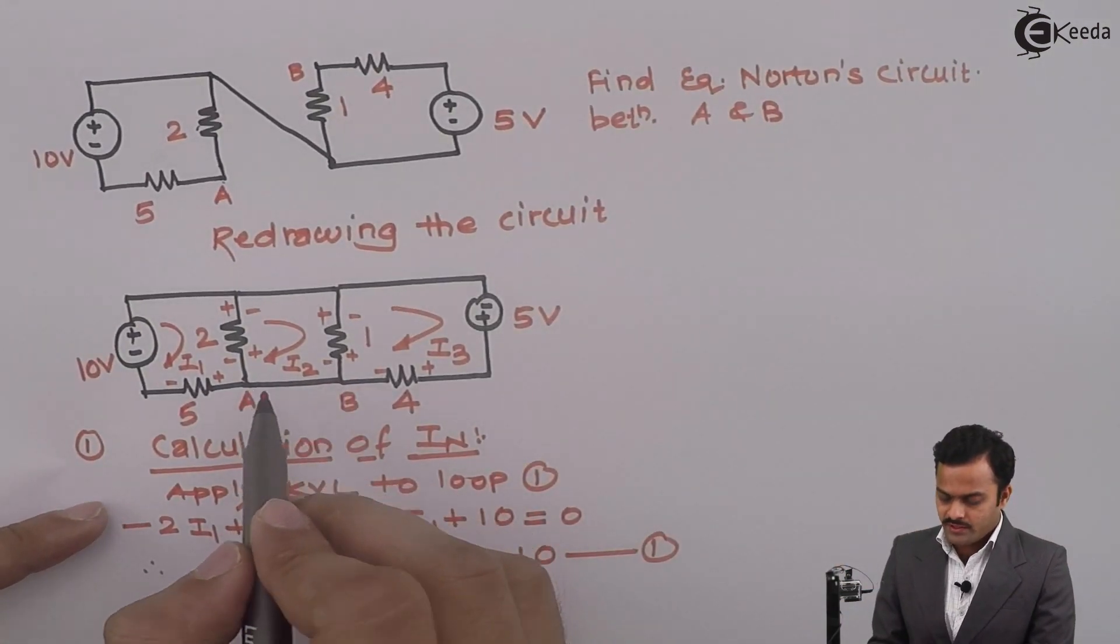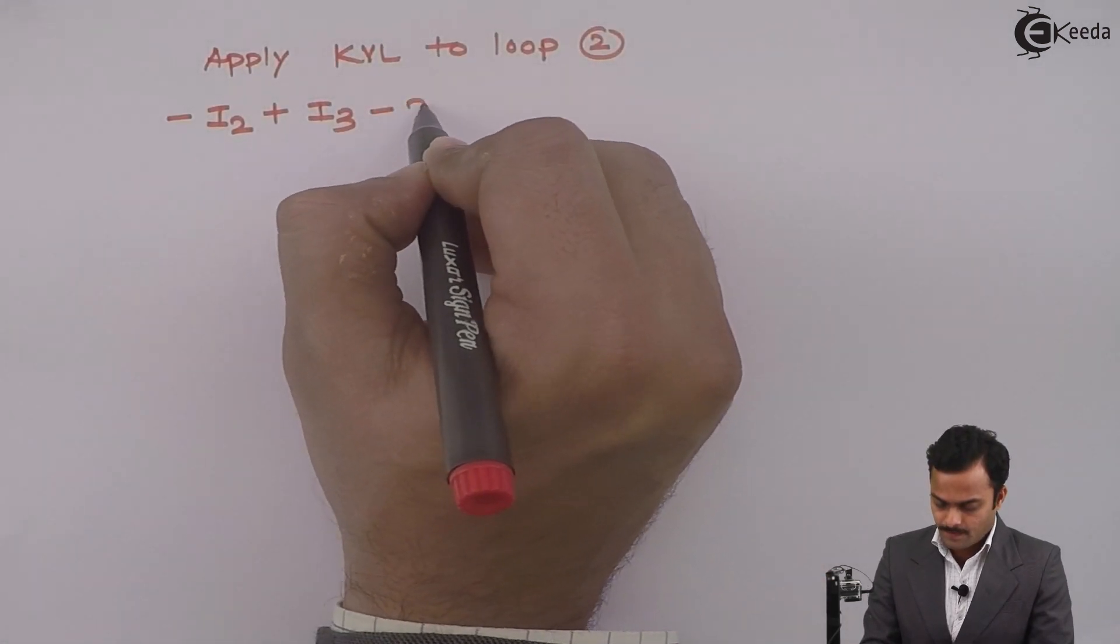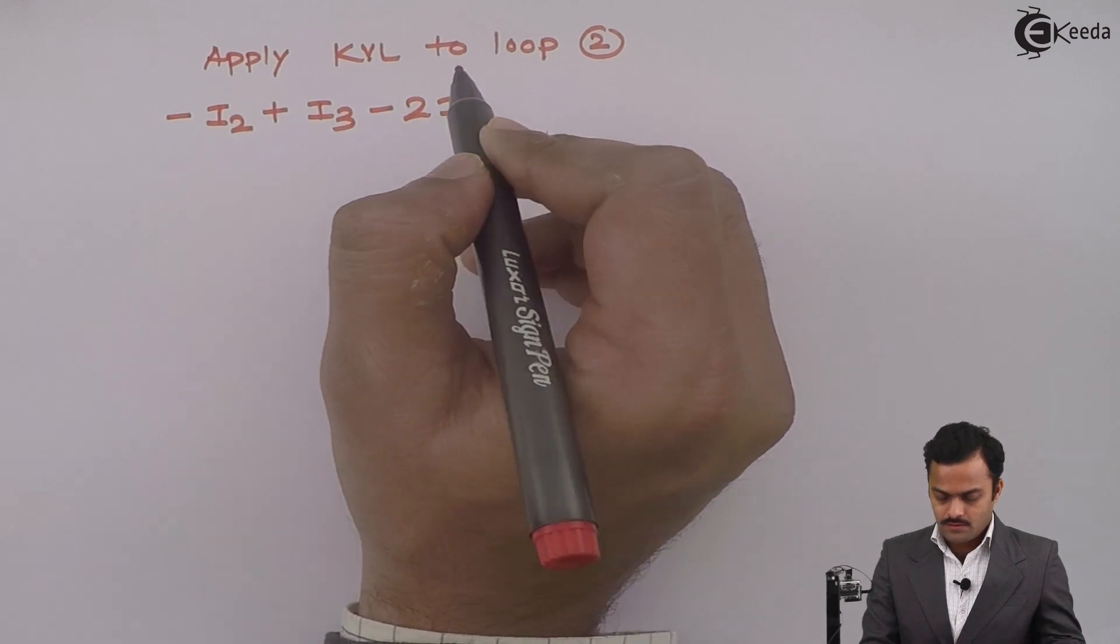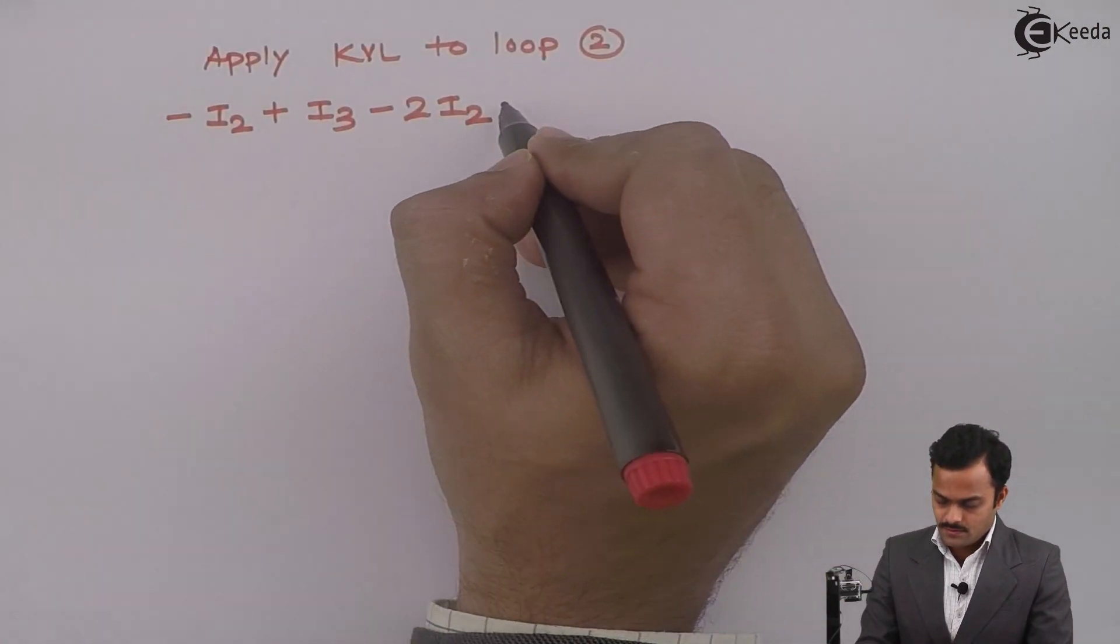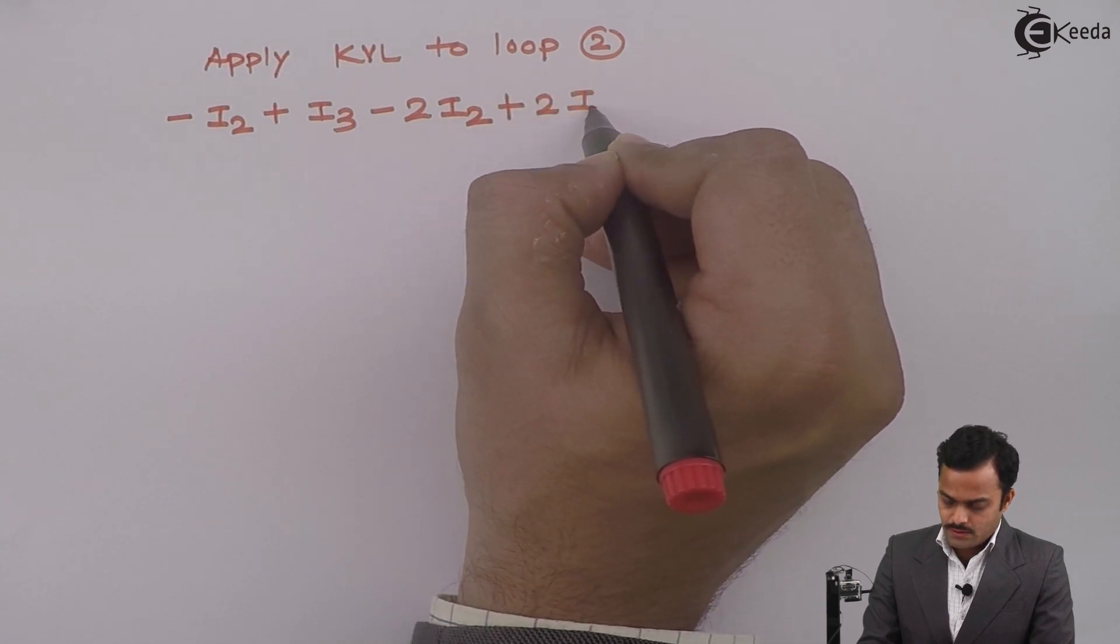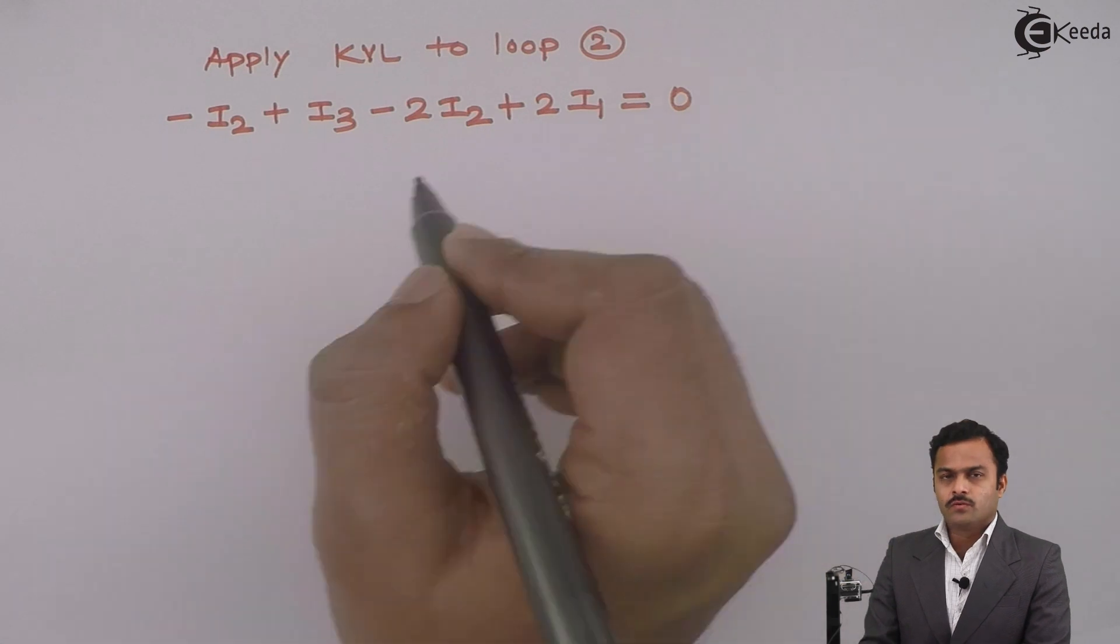No element is connected here. Plus minus, minus, just minus 2I2 once again, and minus plus plus I1. Since there is no battery in this loop, the constant equals 0.